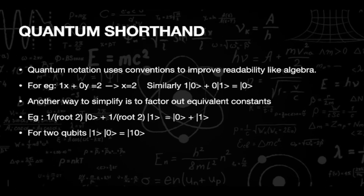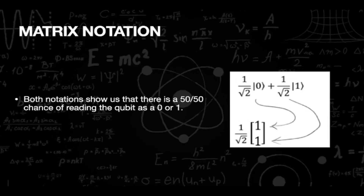The next notation is a simplified version of the previous one, known as quantum shorthand notation. For example, if we have a linear equation 1x + 0y = 2, we can simply write it such that the output will be 0. Another way of simplification is to factor out equivalent constants — for example, 1/√2 |0⟩ + 1/√2 |1⟩, we can ignore the constant of 1/√2. If we have two qubits, we can write both outputs inside a single ket. The last notation is the matrix notation, which is used to derive quantum gates and circuits. Here, instead of their outputs, their probabilities are written inside a matrix.